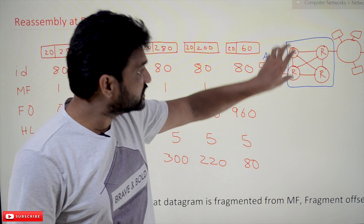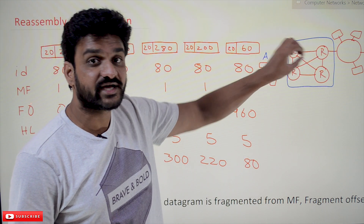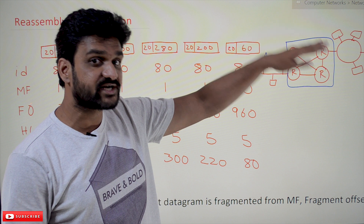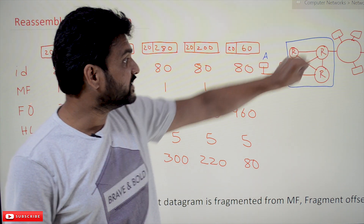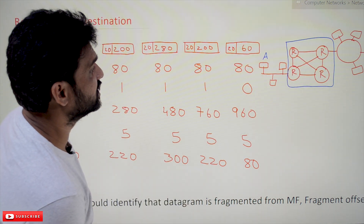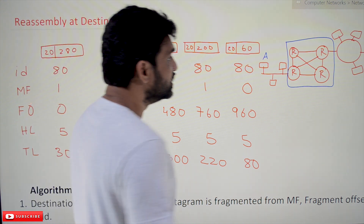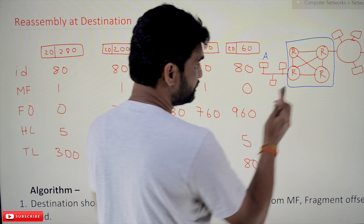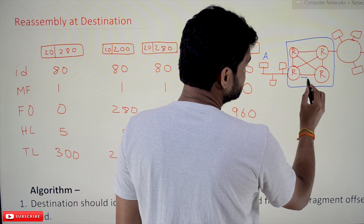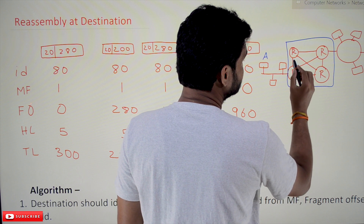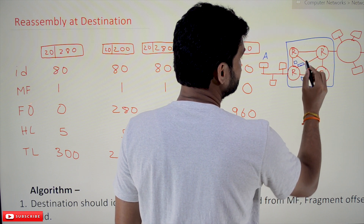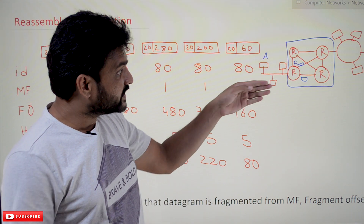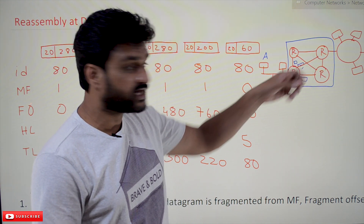In this interconnection of routers, it uses a connectionless oriented service. In packet switching we have discussed two types of service: connection-oriented and connectionless. Here the packets will be redirected — there is no specific path, so one packet may go in one direction, another packet in another direction.